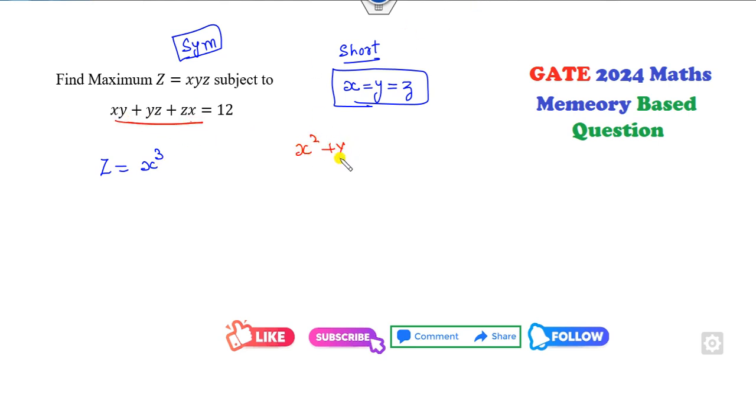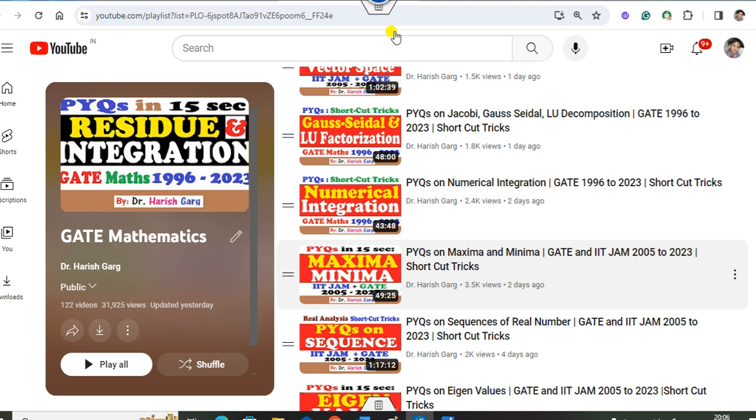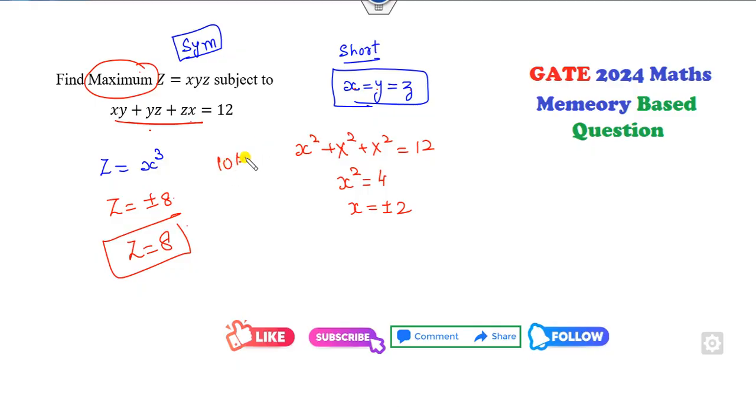It will be X squared plus X squared plus X squared because X, Y, and Z are the same, which equals 12. So X squared will be 4, X is plus or minus 2. If I substitute here, the answer will be plus or minus 8. My target is to find the maximum of Z, so the answer is 8. The same question is available on my YouTube channel Dr. Harishgar in this playlist. If you watch this lecture, you can solve this question within 10 seconds. Kindly put a like on my video if you watched this lecture and got the answer within 10 seconds.